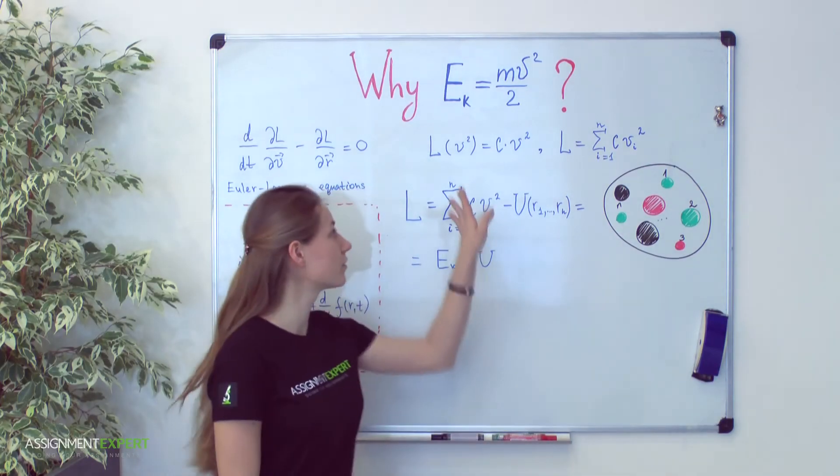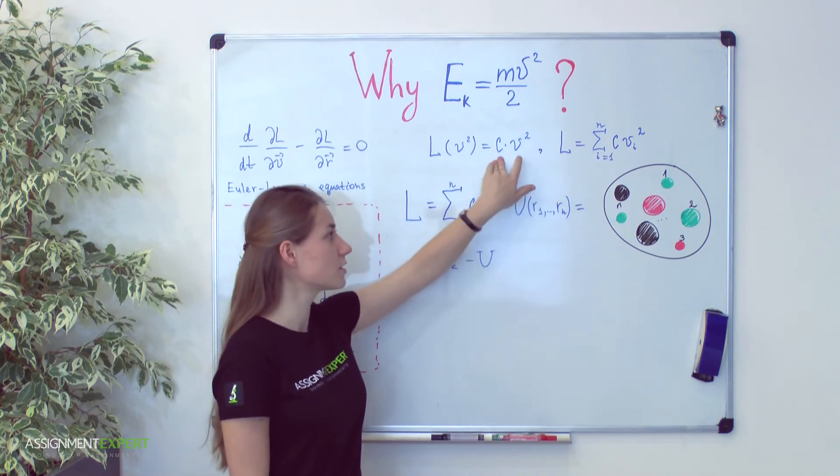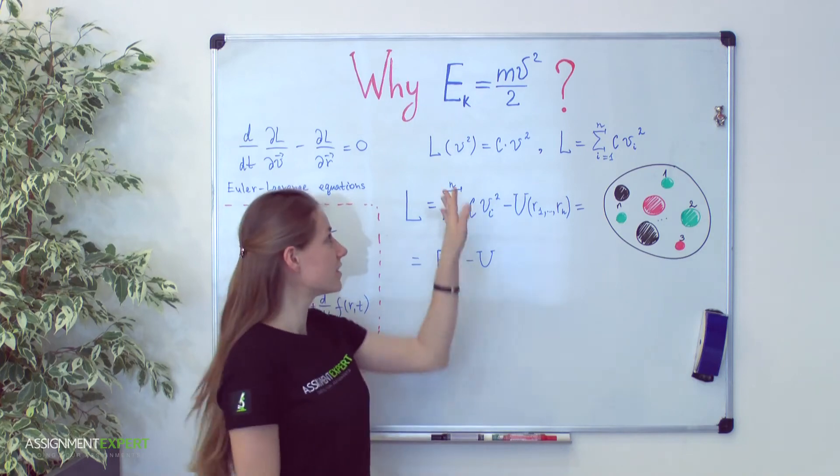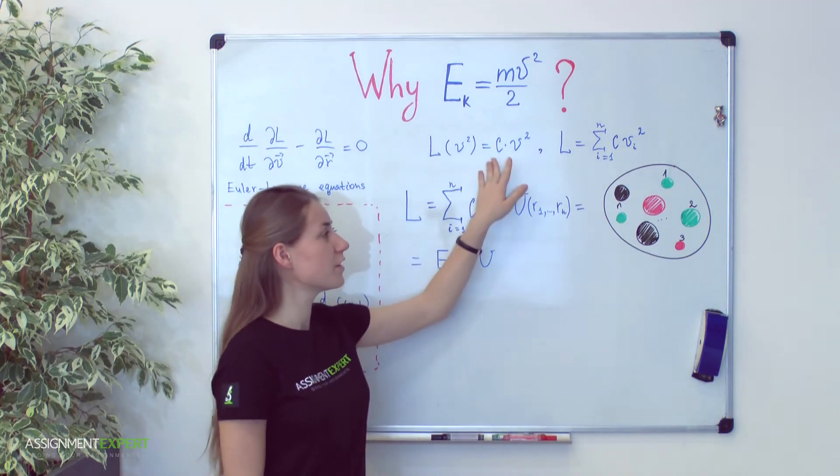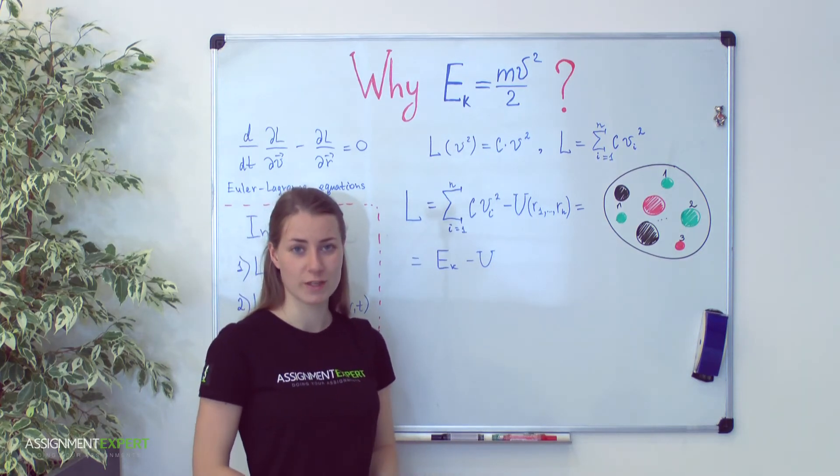For physical system we got that our Lagrange function is proportional to the square of velocity and some constant c. You see that the form of Lagrange function is very similar to form of kinetic energy. And it's not just a coincidence.